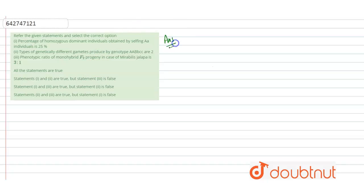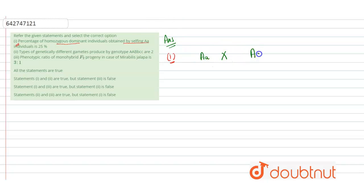We will solve this by taking each statement one by one. First, we take statement one: percentage of homozygous dominant individuals obtained by selfing a heterozygous individual is 25 percent. Selfing means the heterozygous individual is crossed with itself, so we need to find the percentage of homozygous dominant individuals. We will determine the gametes produced.